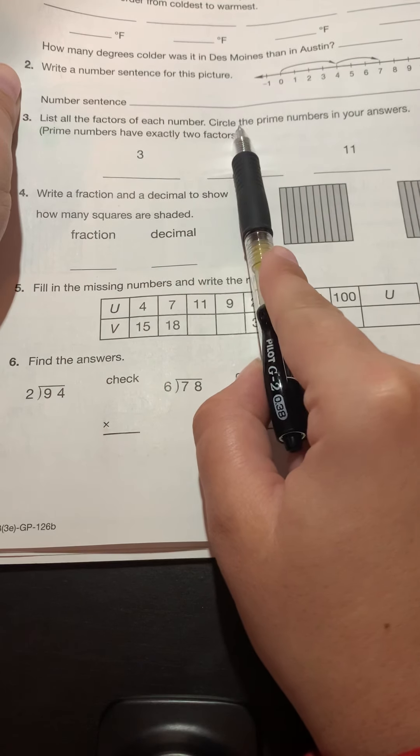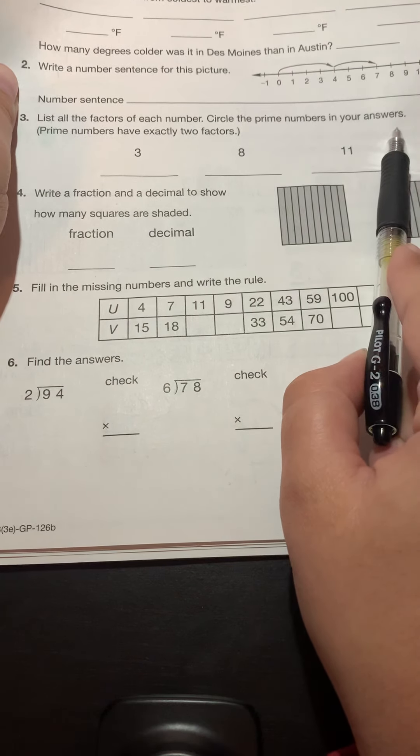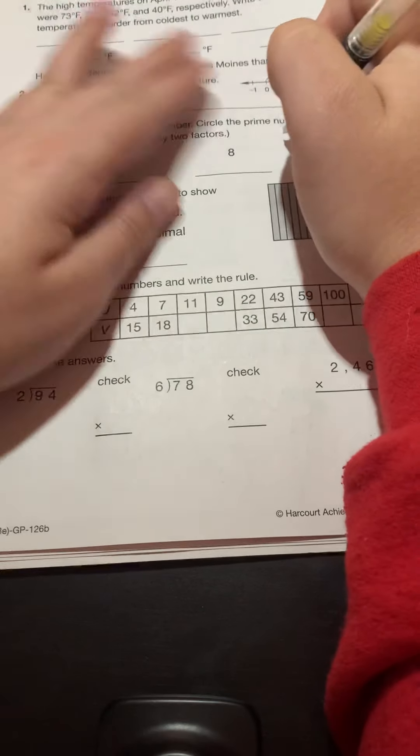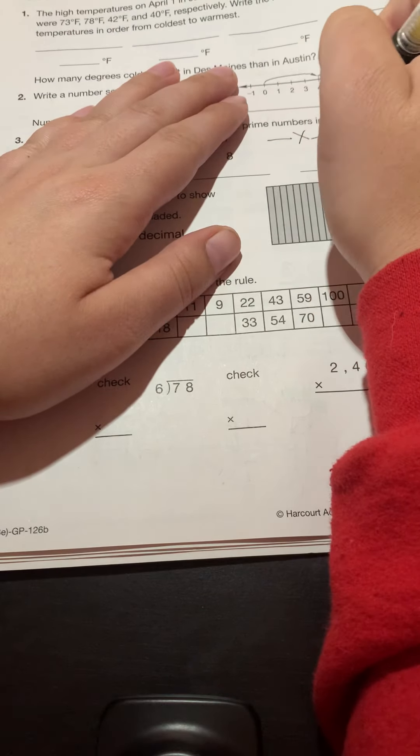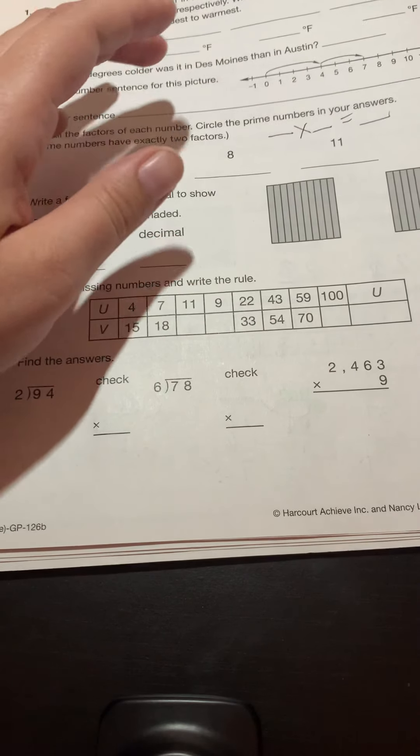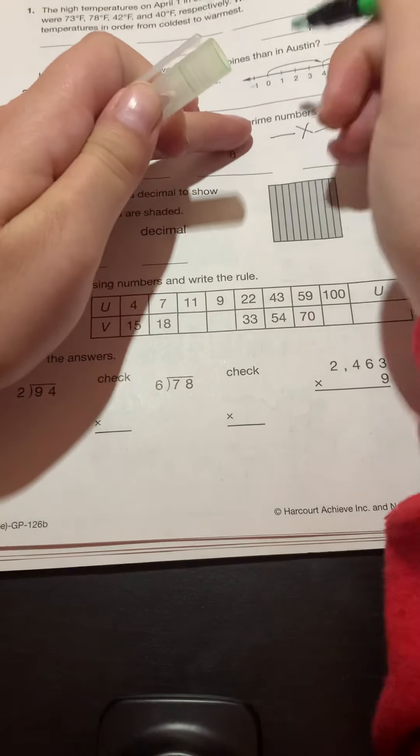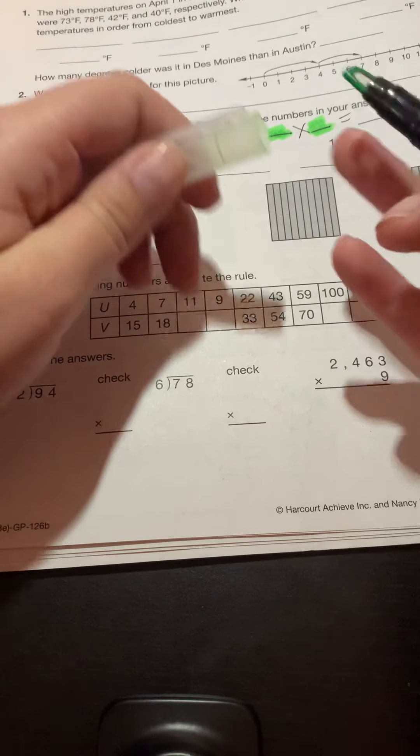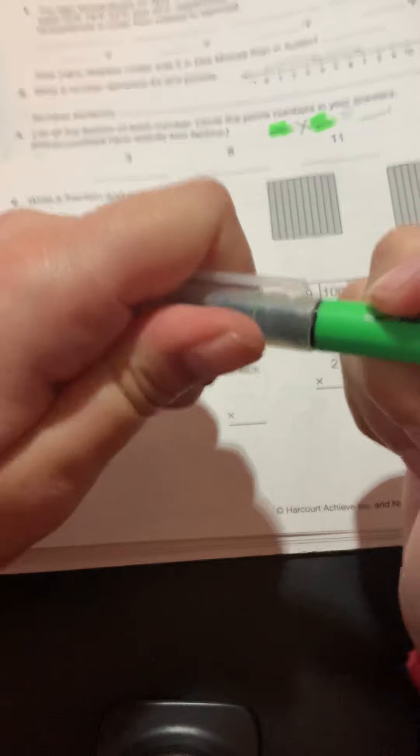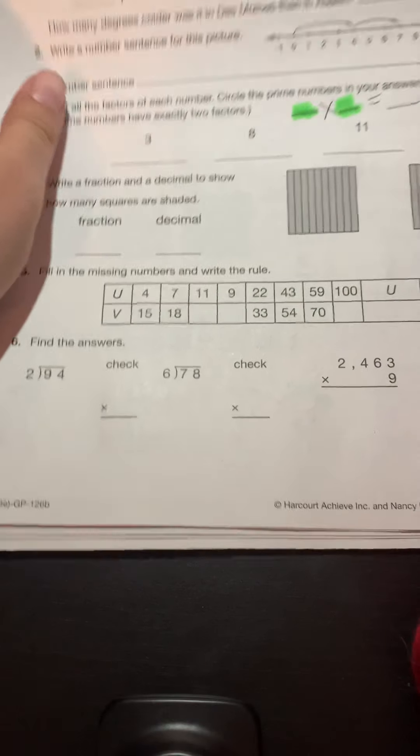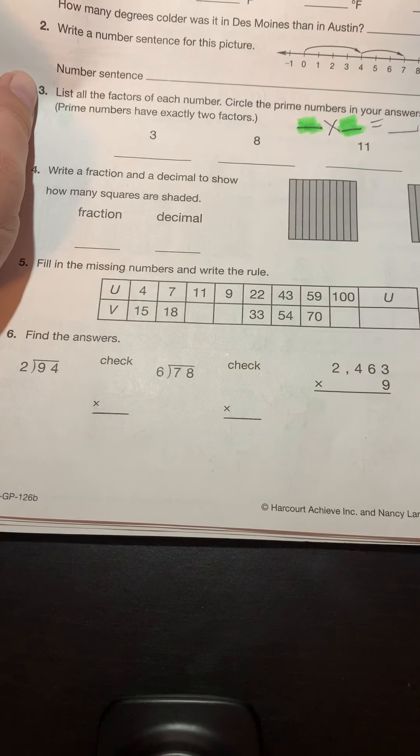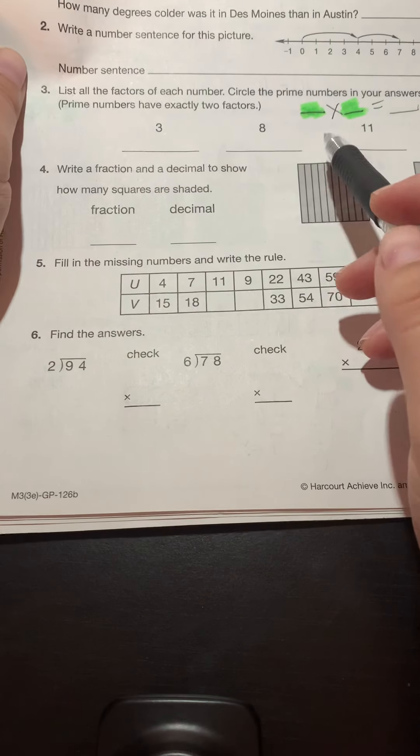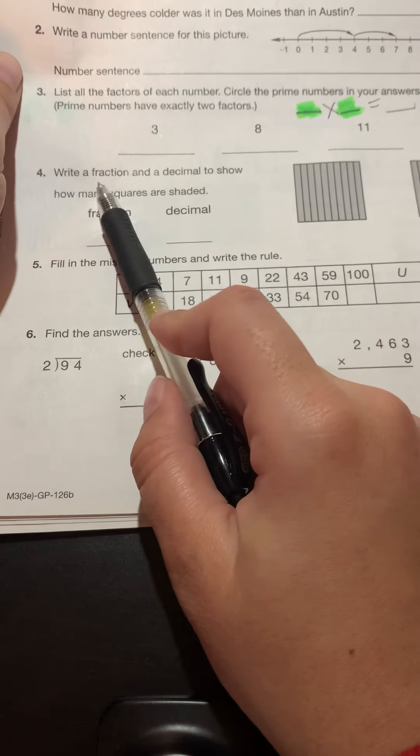Number three, list all the factors of each number. Circle the prime numbers in your answers. Prime numbers have exactly two factors. Remember, your factors are only going to be these two numbers that you multiply together to get an answer. So that's what you're thinking about. And a prime number only has one times the answer, one times itself. It won't have any other factors.